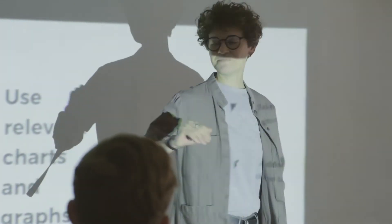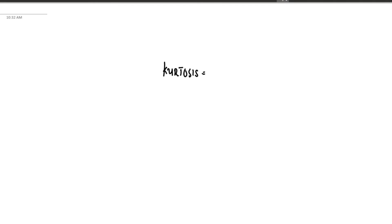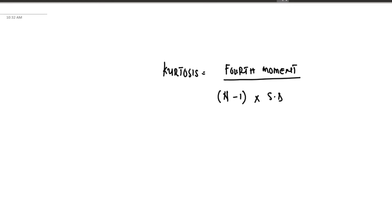Let's move into our worksheet to see what the formula looks like. In mathematical terms, the kurtosis formula is equal to the fourth moment of the mean divided by the size of the data — that is n minus one — times the standard deviation. We use the notation mu4, where mu4 represents the fourth moment of the mean, with the denominator being n minus one times the standard deviation raised to the power of four.